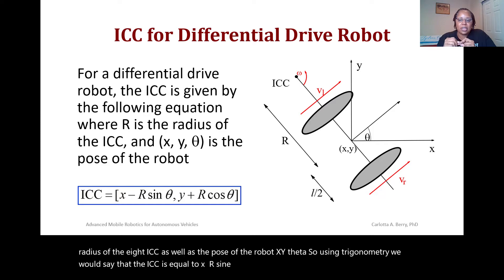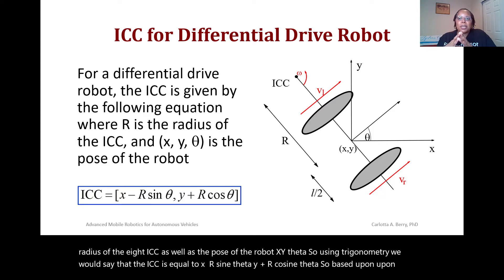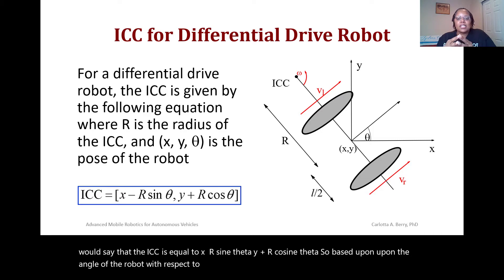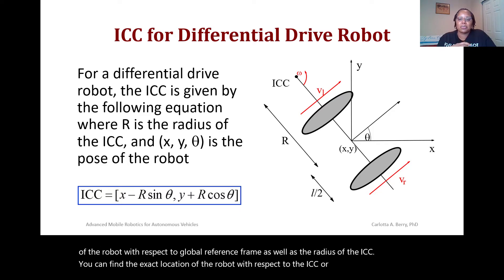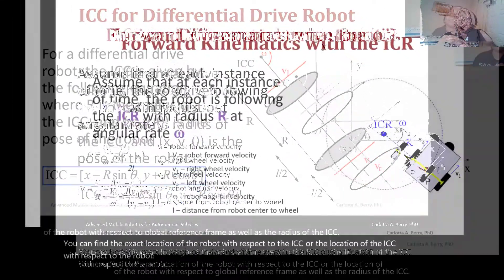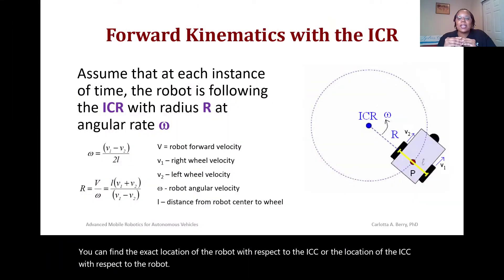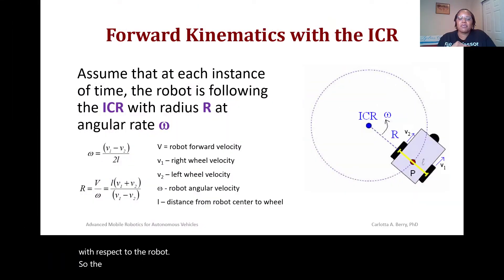Based upon the angle of the robot with respect to the global reference frame as well as the radius of the ICC, you can find the exact location of the robot with respect to the ICC — or the location of the ICC with respect to the robot. The forward kinematics for the ICR can be found by assuming that at each instant of time the robot is following the ICR with radius R at some angular velocity omega.